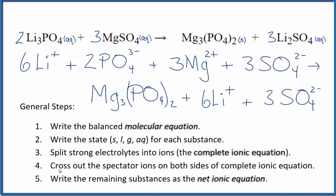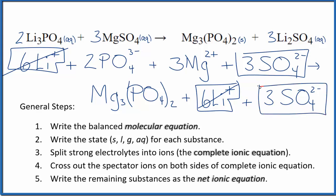Now we can cross out the spectator ions - they're on both sides of the complete ionic equation. I have six lithium ions in the reactants and six lithium ions in the products. They haven't changed, so cross those out. I have three sulfate ions here and in the products, so these are spectator ions. Everything else is unique.